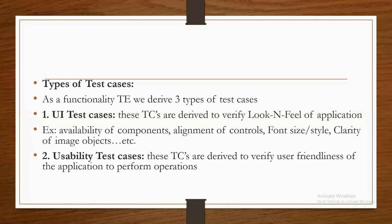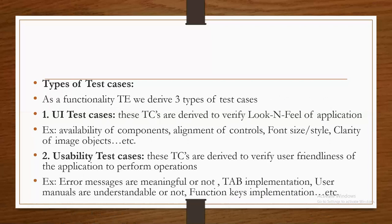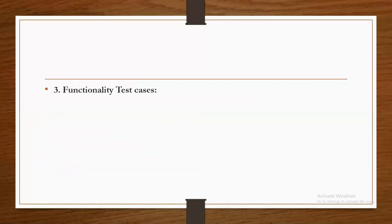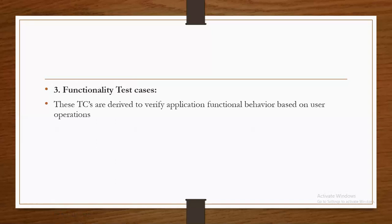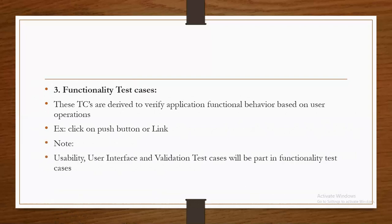Usability test cases verify how easy it is to operate the application — such as whether error messages are meaningful, whether proper messages are displaying, tab implementation, whether user manuals are understandable, and function keys implementation. These kinds of things are verified through usability test cases. The third type is functionality test cases. These test cases are derived to verify application functional behavior based on user operations — for example, if you click on a link, how the application responds; if you click a submit button, how it responds. Validation of an edit box — what characters it allows, what size, whether drop-down has expected values — also comes under functionality test cases.